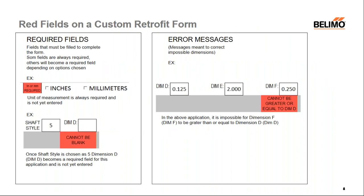Red fields on the custom retrofit form come in two types: required fields and error messages. Some fields are always required, and others become required as the form is filled in. For example, inches or millimeters is required as soon as the form is open. Dimension D cannot be blank is a field that only becomes required after shaft style is filled in as five. Error messages are displayed in red and give a short description of what is incorrect, such as dimension F cannot be greater than or equal to dimension D.